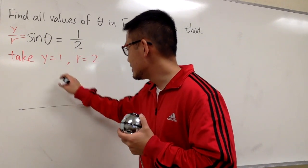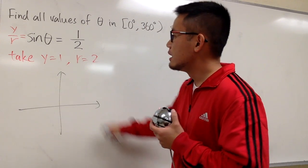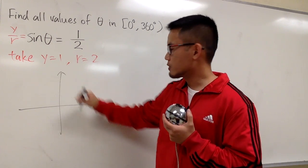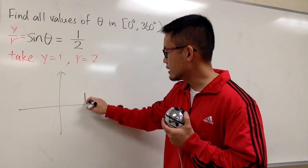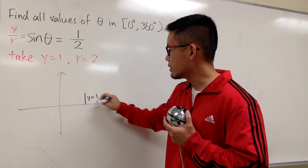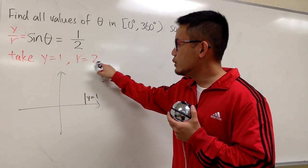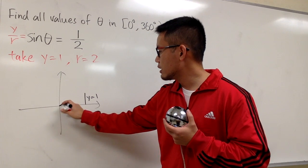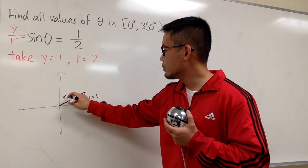Here's the x-axis and the y-axis. Based on the information we're given, y equals 1. So I can draw that—y equals 1. I'll label that right here. r equals 2, which means from the origin to this point, r equals 2.